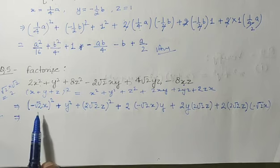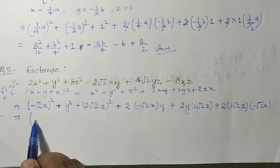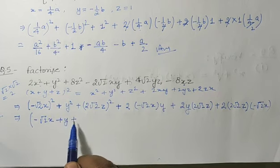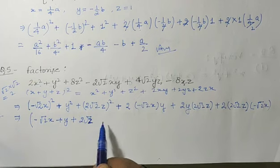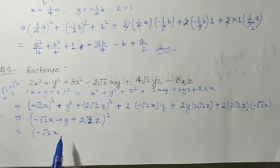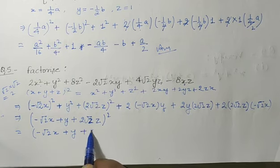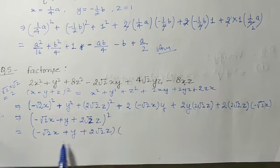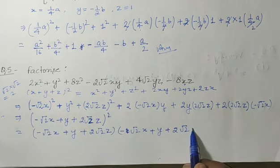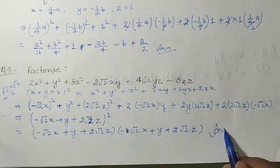So this equals (-√2x + y + 2√2z)². In factored product form: (-√2x + y + 2√2z)(-√2x + y + 2√2z). This is your answer.